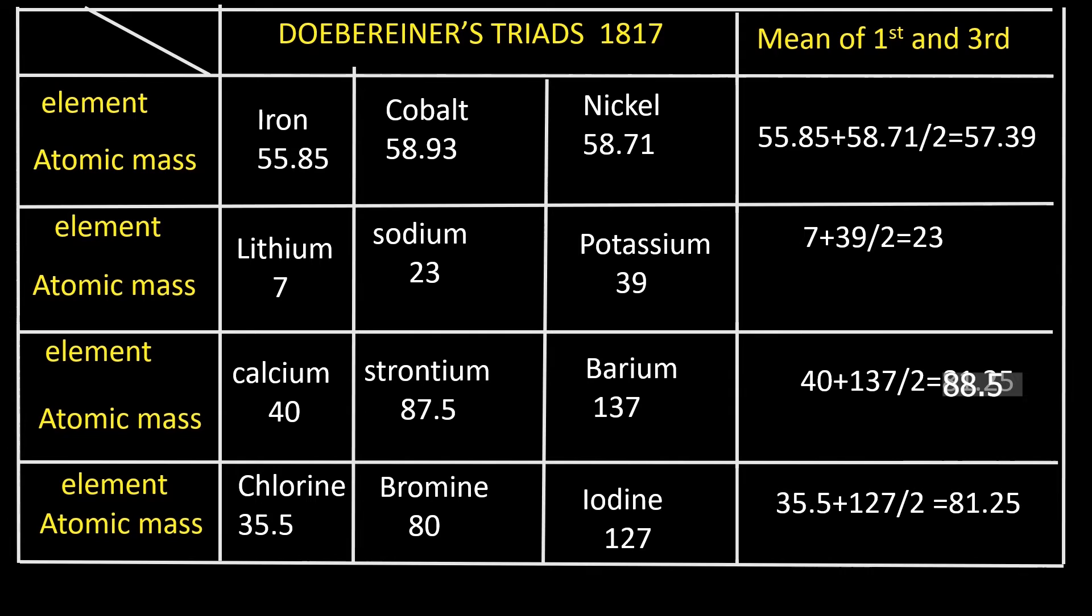Please note that Dobreiner also considered atomic weight as the criteria. But this method did not gain prominence because all the elements could not be classified.